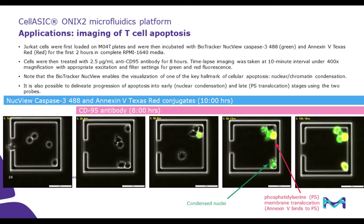Another example application of trap plates is to study suspension cell apoptosis in real time. Here we are perfusing T-cells with a NucView caspase-3 active apoptosis probe and Annexin-V. Upon activation of the death receptor CD95, T-cells will undergo programmed cell death. Images on the bottom are snapshots taken from live cell movies where T-cells are undergoing programmed cell death upon CD95 activation. First, we can visualize nuclear condensation upon caspase activation, as indicated by green fluorescence, followed by phosphatidylserine expression on the membrane of the dying cell, as indicated by red fluorescence.